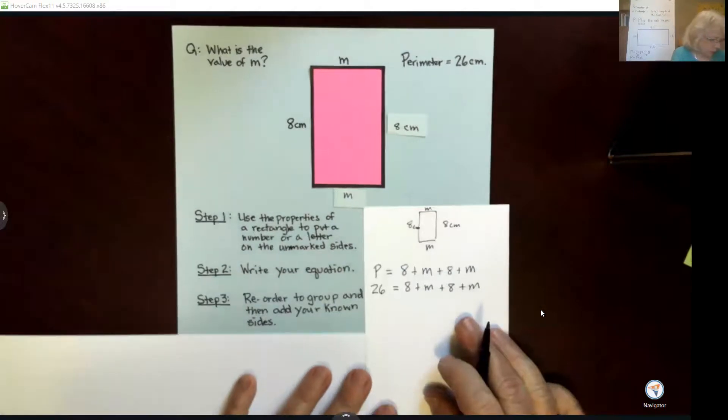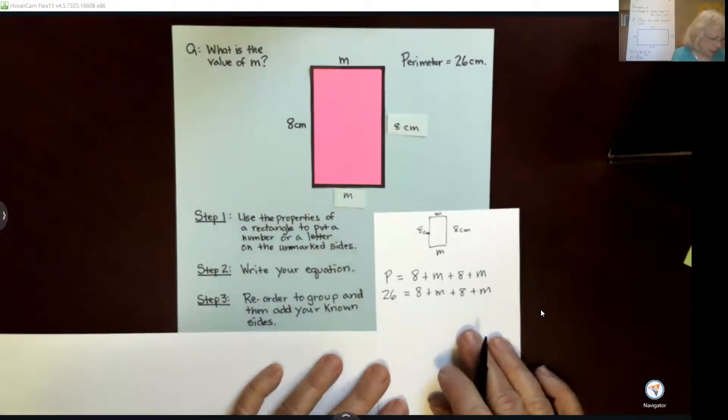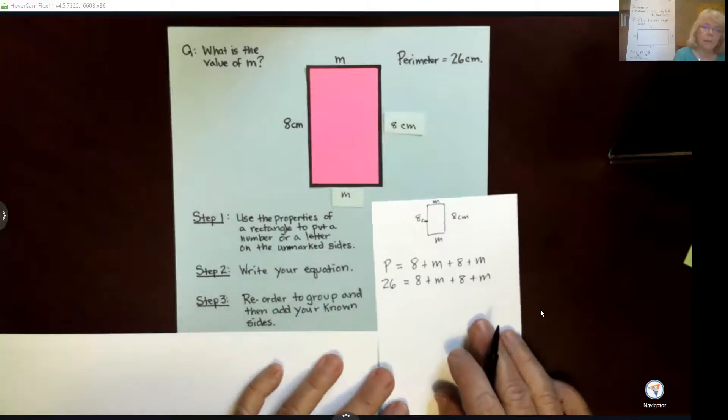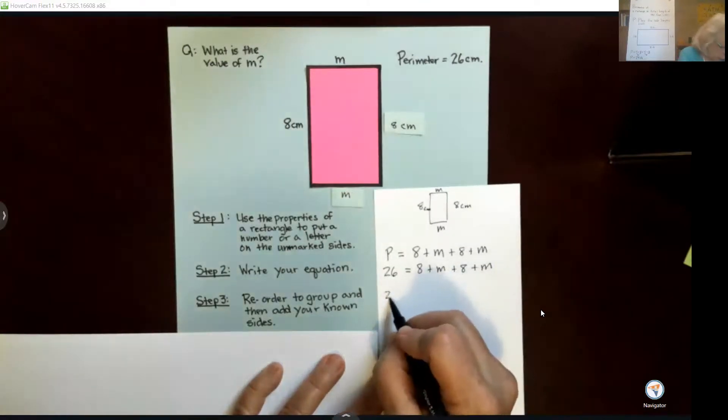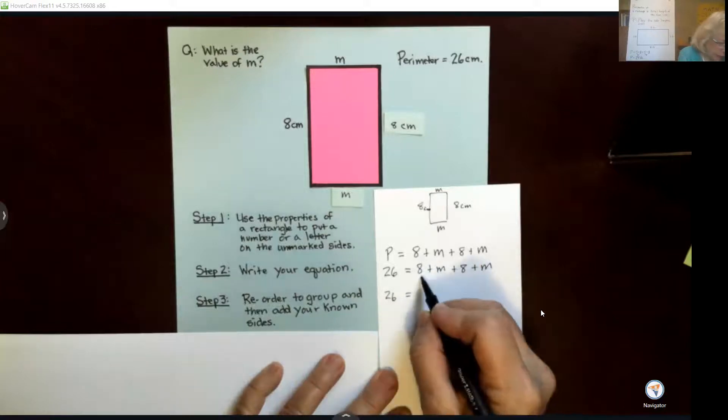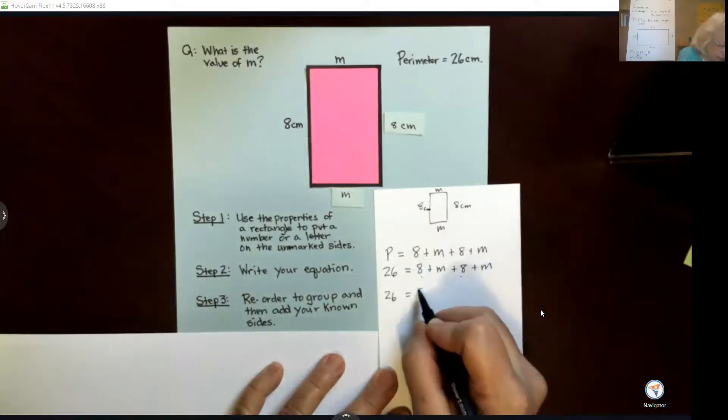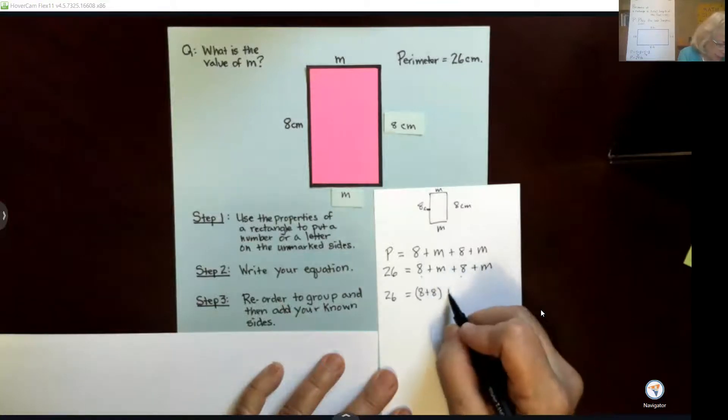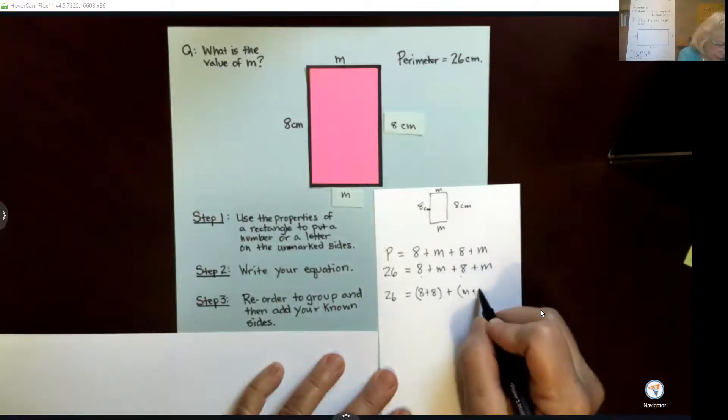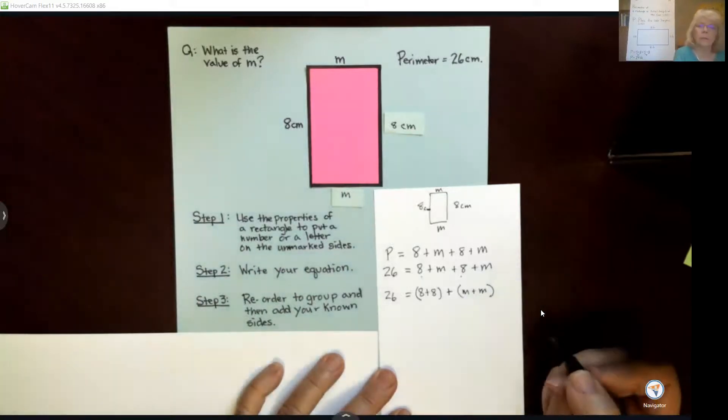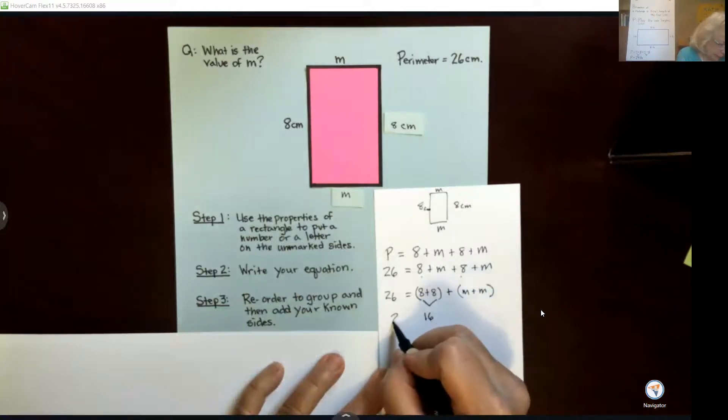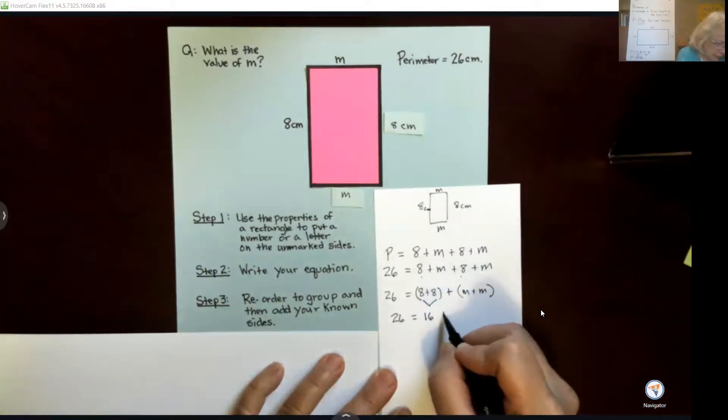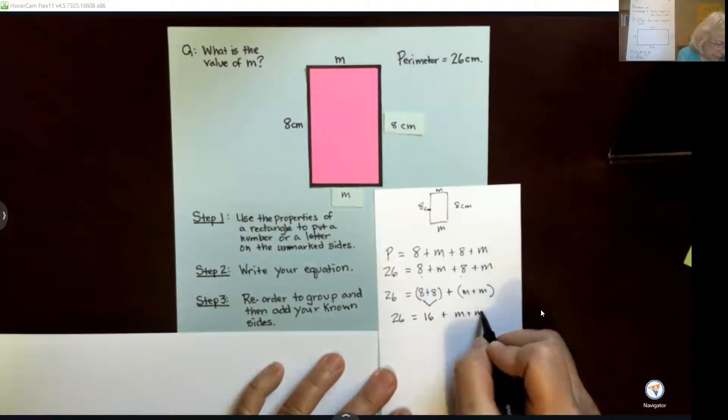Now we're going to reorder to group and then add our known sides. So this looks like this where we are now going to go 26 is equal to, I just take these two and put them together, 8 plus 8, and then I add my m's together like this. Now I don't know what those are, so those just stay there, but I do know what 8 plus 8 is, it's 16. So I have 26 is equal to 16 plus m plus m.